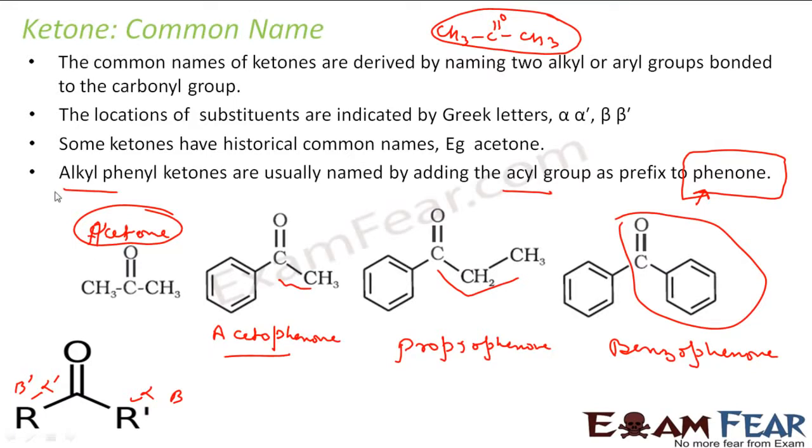In common name terms, two carbons are generally called acetyl, so it's acetophenone. This is one, two, three - three carbons, so it will be propiophenone. And in this, a benzo group is attached, so it is benzophenone. This is just common name, not IUPAC name.